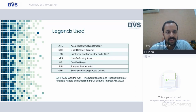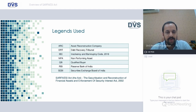Legends used in this presentation: ARC which is Self-Explanatory Asset Reconstruction Company; DRT, Debt Recovery Tribunal; IBC, Insolvency and Bankruptcy Code; NPA, Non-Performing Asset; QB, Qualified Buyer; RBI, Reserve Bank of India; and SEBI, Securities Exchange Board of India.